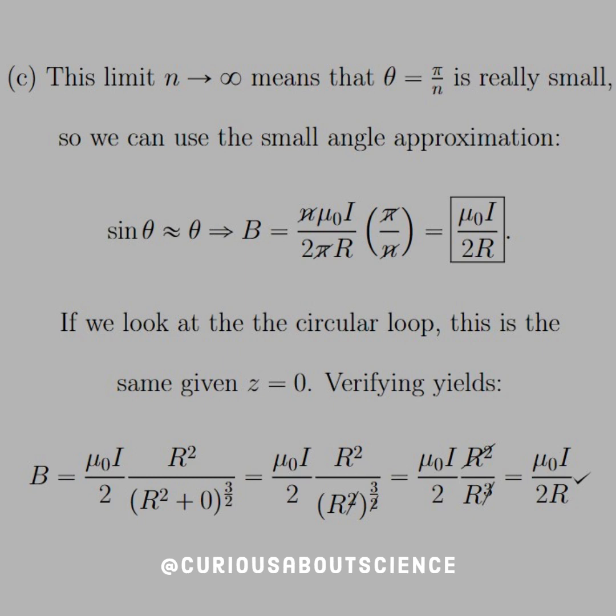Anyways, applying this to this situation, we see that 2 sine of pi over n term cancels down to just pi over n. And then we have the n's cancelling and the pi's cancelling, thus leaving us with mu naught I over 2R.